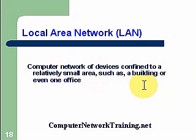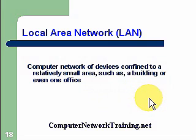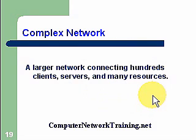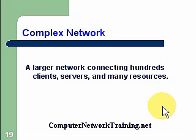A LAN could be an office or a single building — a set of computers. Generally we have a server and other resources such as a printer or faxes. A complex network would be a local area network that is a little bit more complex and larger, possibly extended over more than one building with many different resources connected.